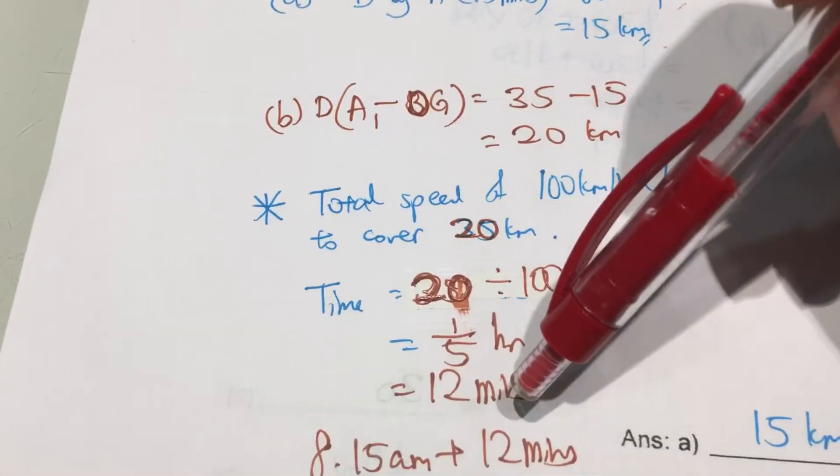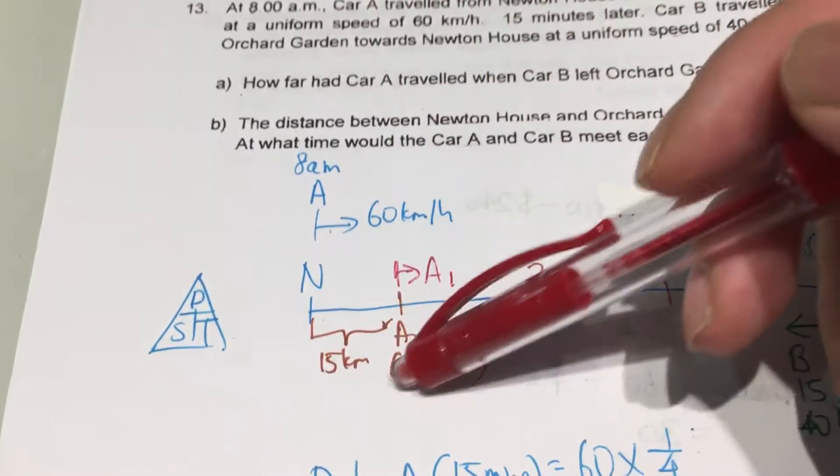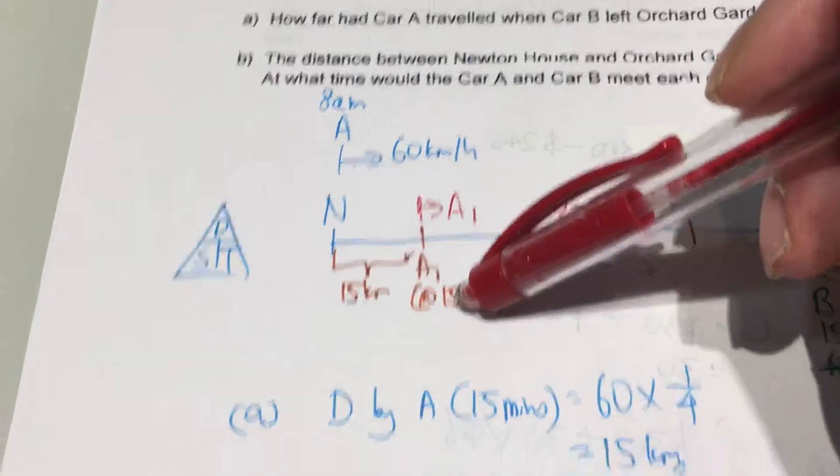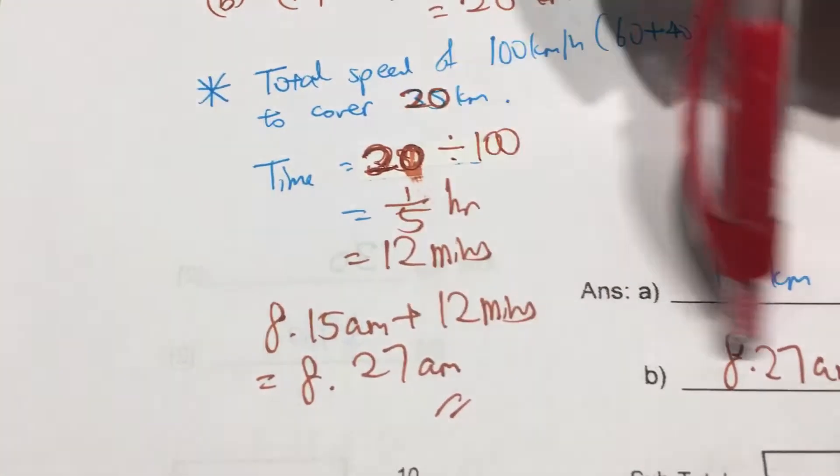So don't forget that you don't count 12 minutes from 8am, because this is already 8:15. 8:15 plus another 12 minutes to give you 8:27 am.